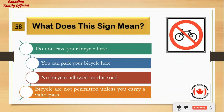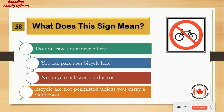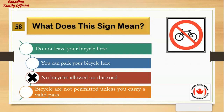What does this sign mean? Number 1: do not leave your bicycle here. Number 2: you can park your bicycle here. Number 3: no bicycles allowed on this road. Number 4: bicycles are not permitted unless you carry a valid pass. And the answer is: no bicycles allowed on this road.